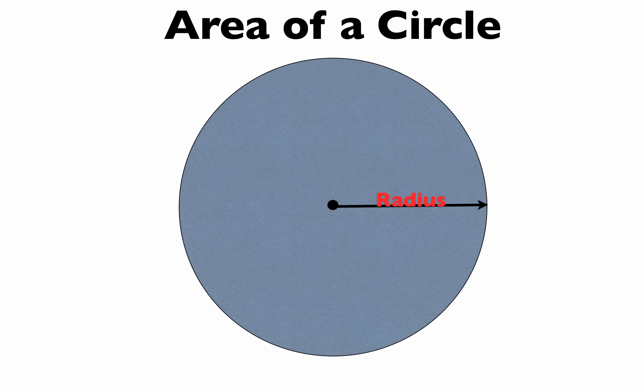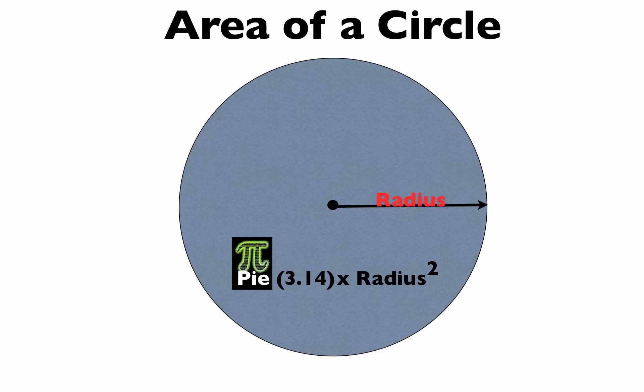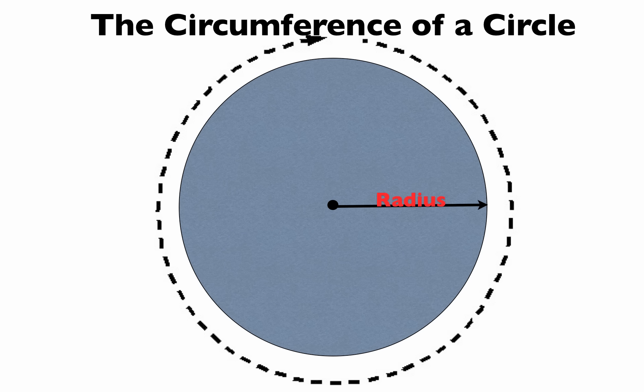The area of a circle equals pi times the radius squared. The circumference of a circle equals two times pi times the radius.